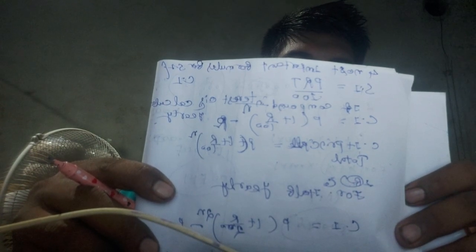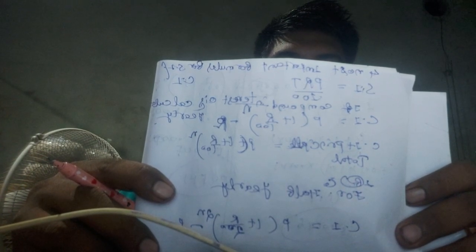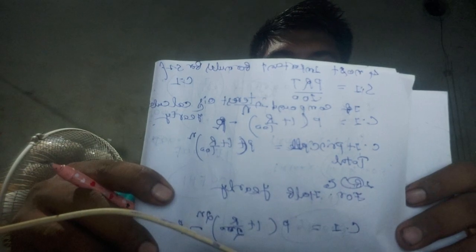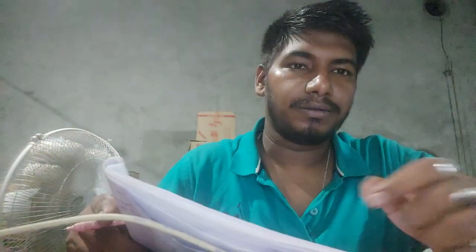These are the four important formulas for calculating Simple Interest and Compound Interest.